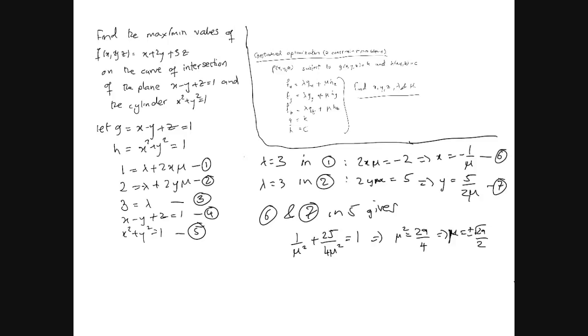Now if mu equals this, then this implies, now we have lambda and mu both, now we need the values of x and y and z. This implies x equals, from equation 6, x equals minus plus, because when you put the positive value it will become negative 2 over square root 29, so it will be just upside down.